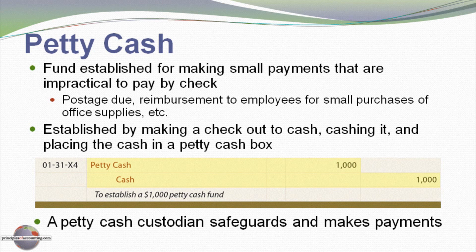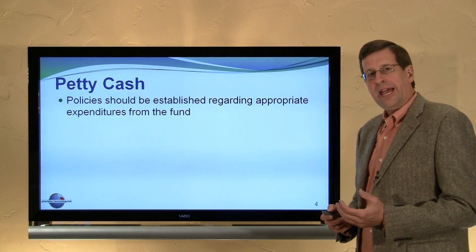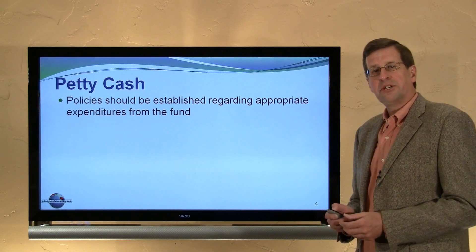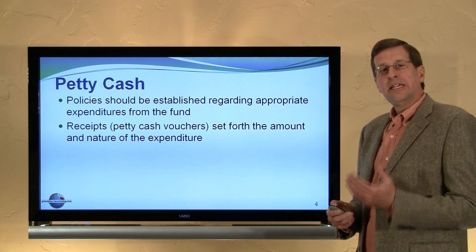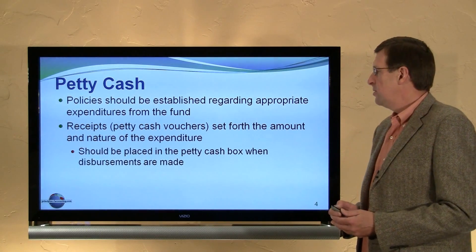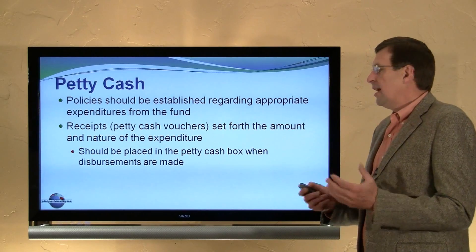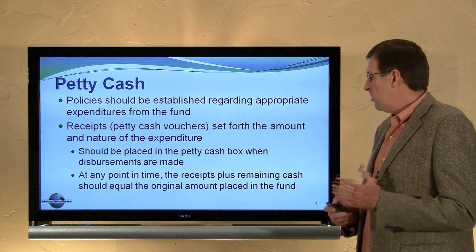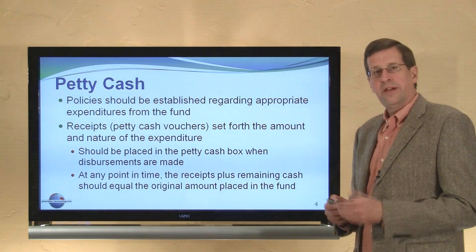A petty cash fund custodian safeguards the funds and makes disbursements out of the fund. In the process of establishing a petty cash fund, it's important to also establish policies regarding the appropriate types of expenditures that can be made, and the process by which receipts are maintained. The receipts should be placed in the petty cash fund as disbursements are made. At any point in time, the receipts plus remaining cash in the fund should equal the total amount of the fund.